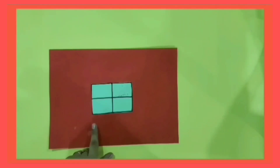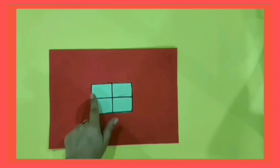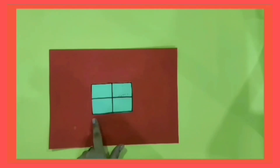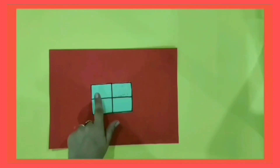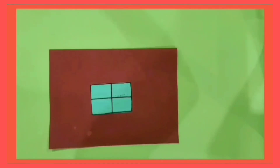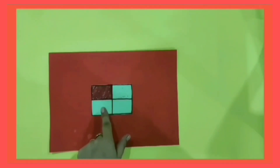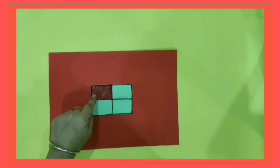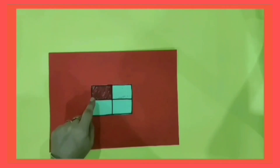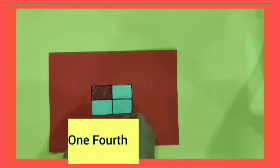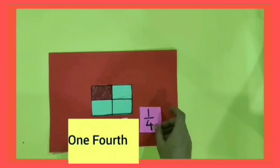Now we discuss it in another way. This is a rectangular shape and it is divided into four equal parts. I color one of its parts out of the four equal parts. Can you tell how many fractions have I colored? Yes, I have colored one-fourth, and in numbers we write it as 1/4.